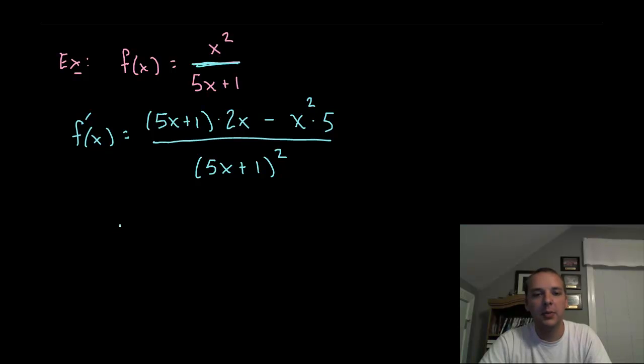Now we should clean this up a little bit. We have 10X squared plus 2X if you distribute here, minus 5X squared, divided by (5X plus 1) quantity squared.